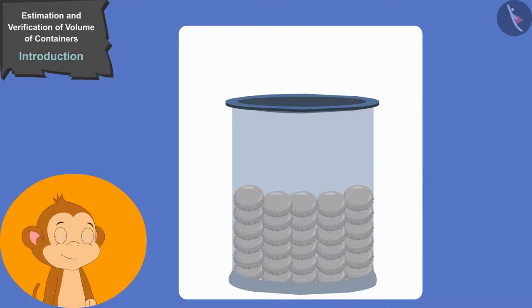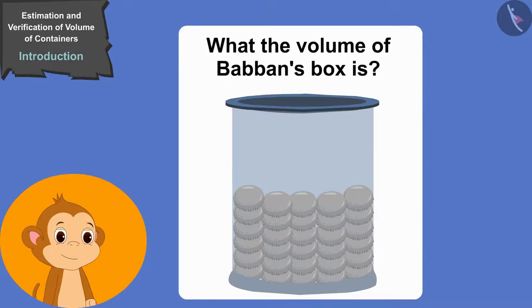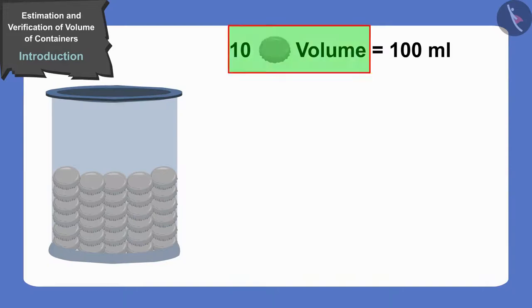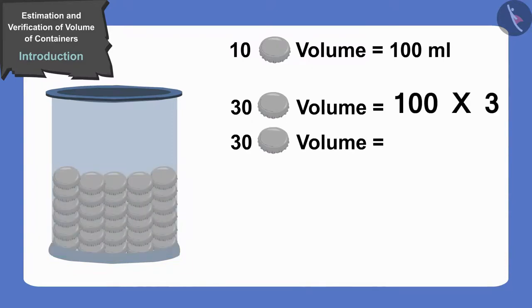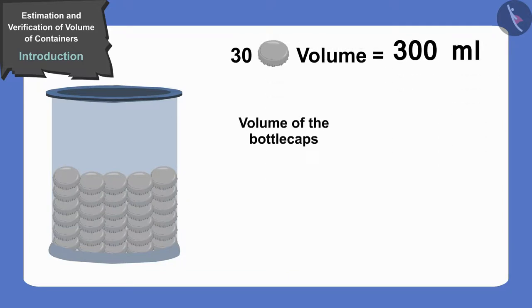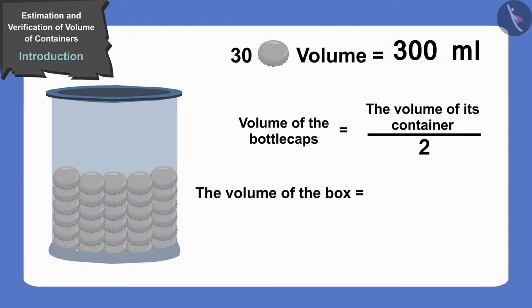Children, if Babban has collected 30 bottle caps in his box and his box is only half full, can you tell what the volume of Babban's box is? If you wish, you can stop the video and think of the answer. The volume of 10 bottle caps is 100 ml. And Babban has collected 30 bottle caps. This will mean the volume of the bottle caps collected by Babban is 100 times 3. That is 300 ml. But the volume of the bottle caps collected by Babban is half the volume of its container. Therefore, the volume of the box of Babban will be 2 times of 300 or 600 ml.